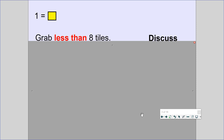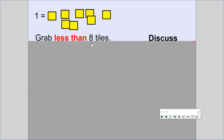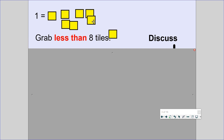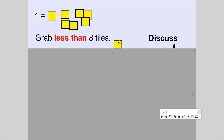Today we are learning inequalities. Imagine you had tiles — each yellow square represents positive 1, or 1 tile. I want you to grab less than 8 tiles. What does that mean? Could you grab 0 tiles? Yes. Could you grab exactly 8 tiles? No. Less than 8 means it could be 1, 2, 3, 4, 5, 6, or 7 tiles — but not 8. Less than means a number that is smaller than what you started with.